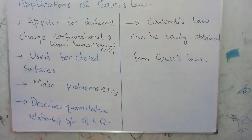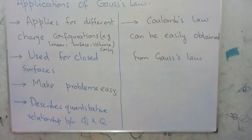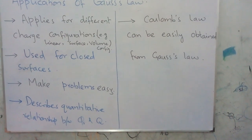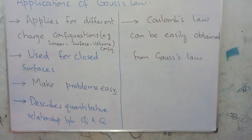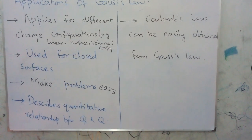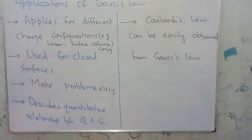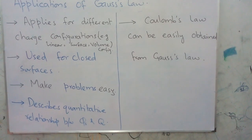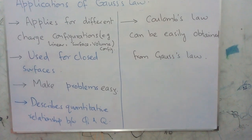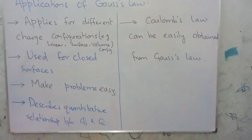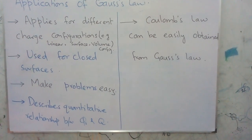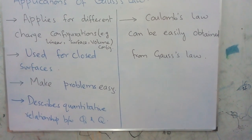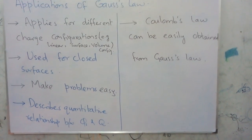Why do we consider the Gaussian surface in Gauss's law? The basic reason is that with the help of the Gaussian surface, we can easily calculate the electric flux, and with the help of the electric flux, we can easily calculate the value of the electric field intensity. So we can say that Gauss's law is used for closed surfaces.